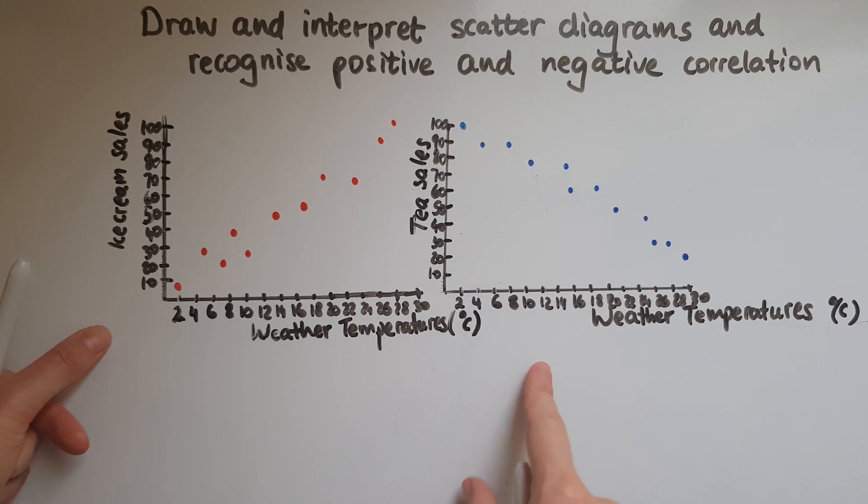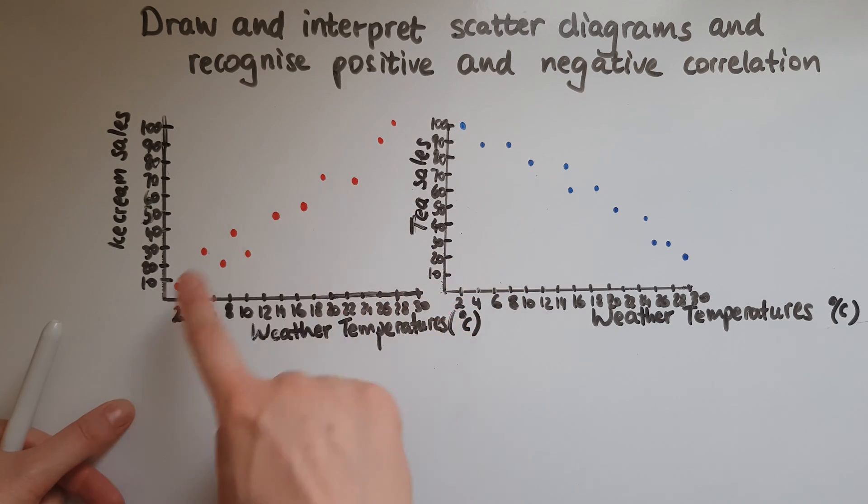The two opposite words. Here we had increase in temperatures, increase in sales. So both of them go in the same direction. So that is a positive relationship, positive correlation.